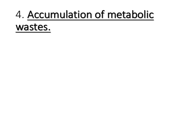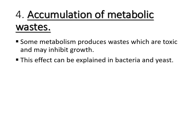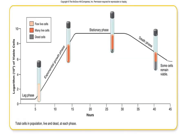The next external factor is the accumulation of metabolic waste. Some metabolic processes produce waste which is toxic and may inhibit growth. This effect can be explained in bacteria and yeast. When the population of bacteria and yeast is high in a culture, they produce a lot of metabolic waste that retards the growth of these microorganisms. In the graph illustrating bacterial growth, we see that initially there is a high rate of growth, but it reaches a stationary phase in which the number of deaths equals the number of cell divisions replacing the dead cells.